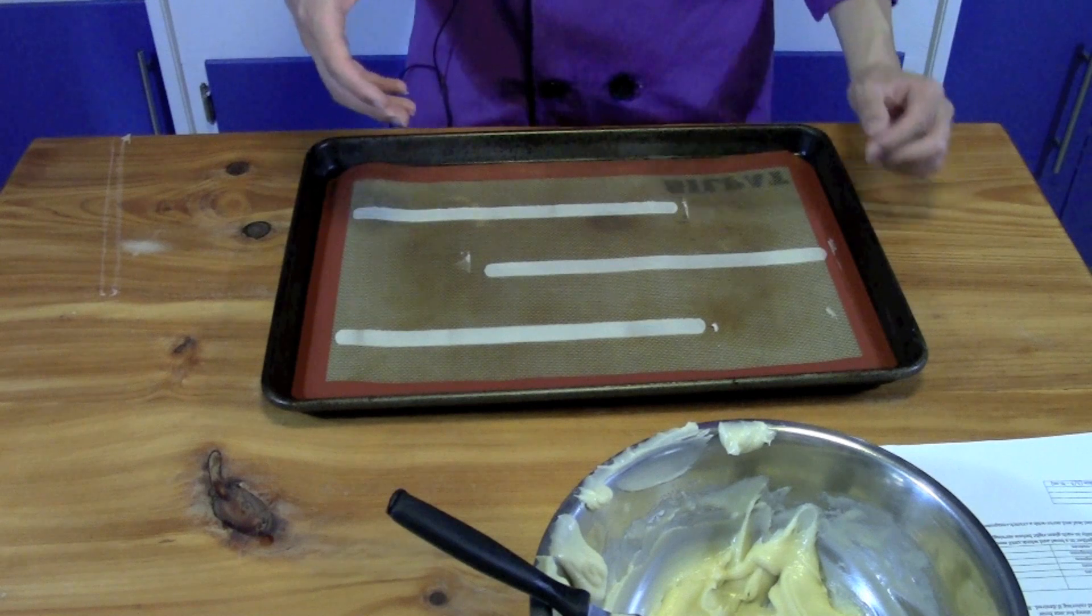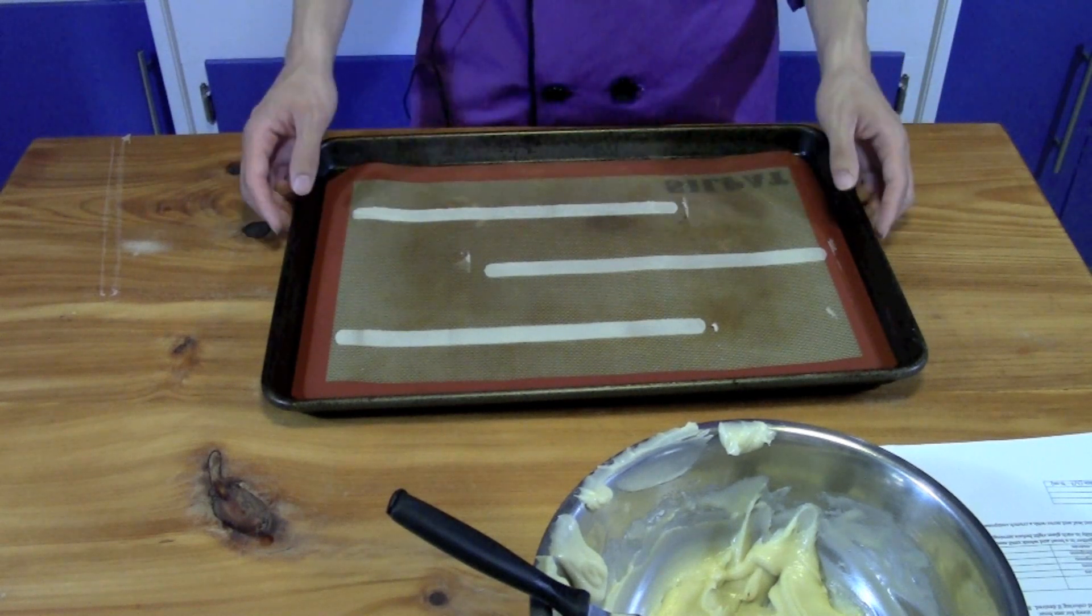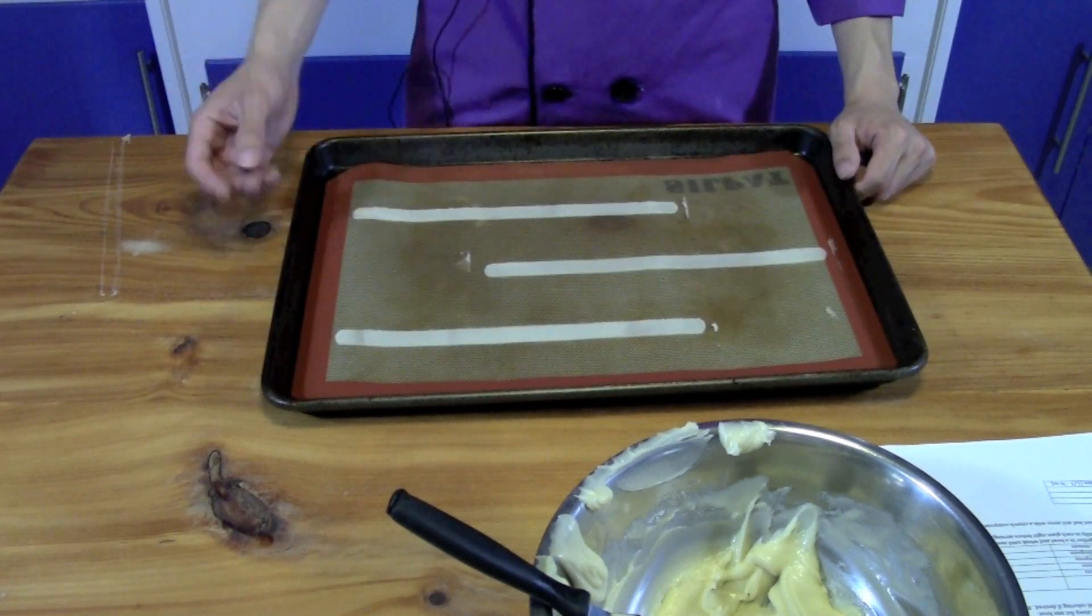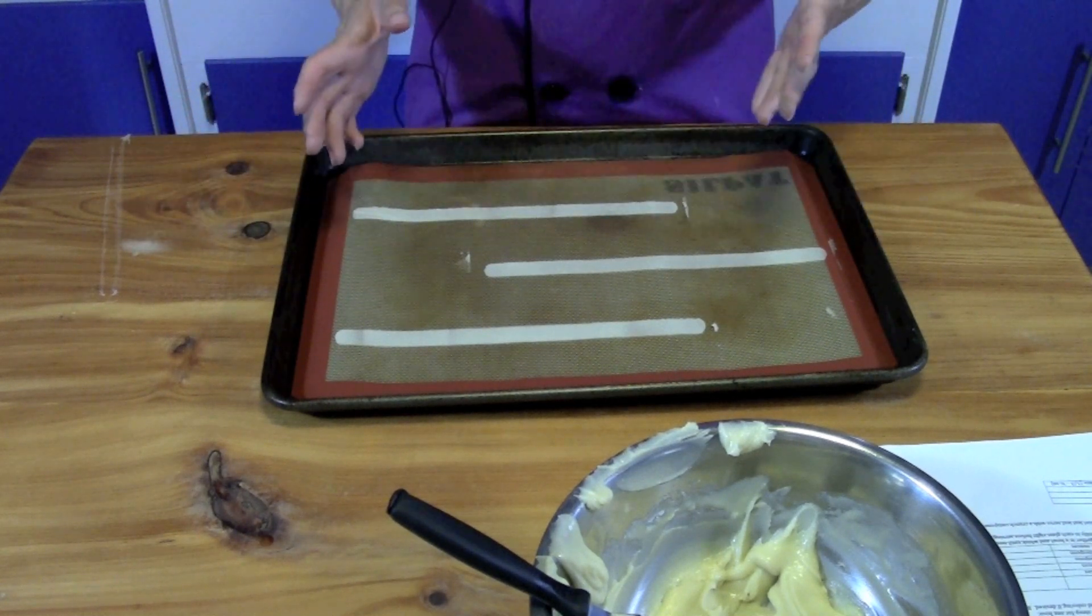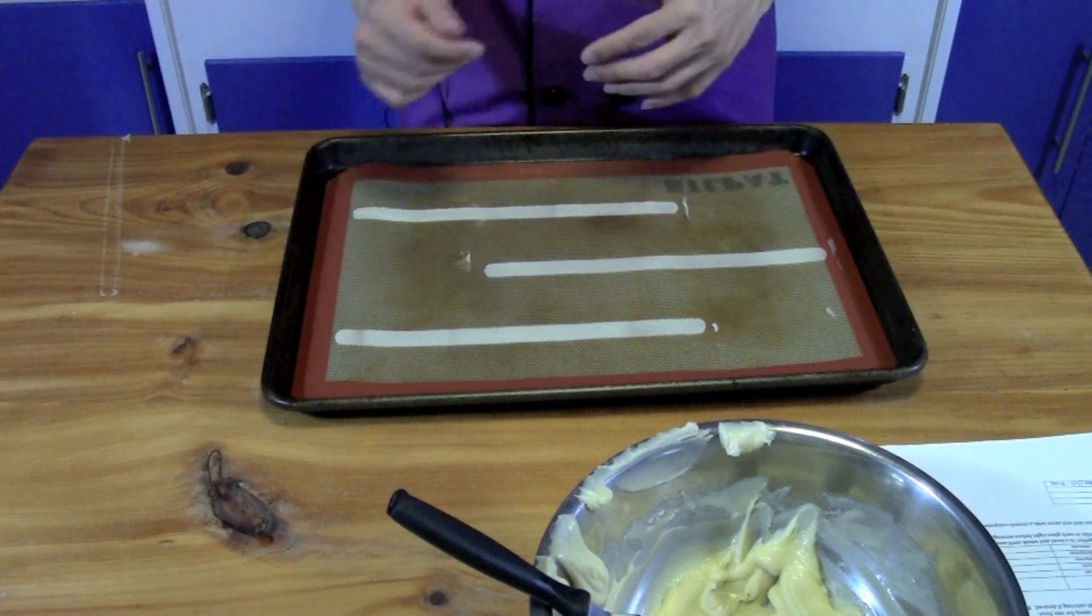And they also are very vulnerable to carryover cooking, which is when the pan is still hot, then they continue to cook so they can get browned really quickly. So about five minutes or so is when they need to come out. It just depends on the size of the cookie and how thick the paste was.